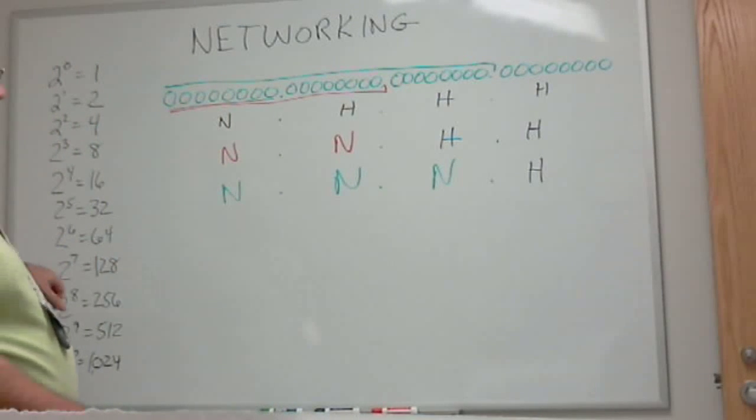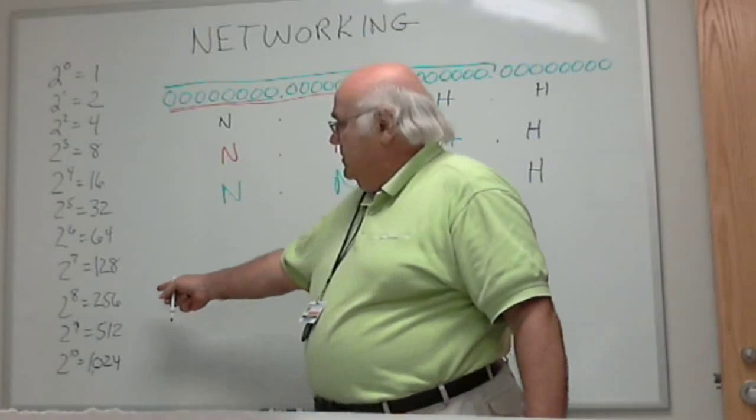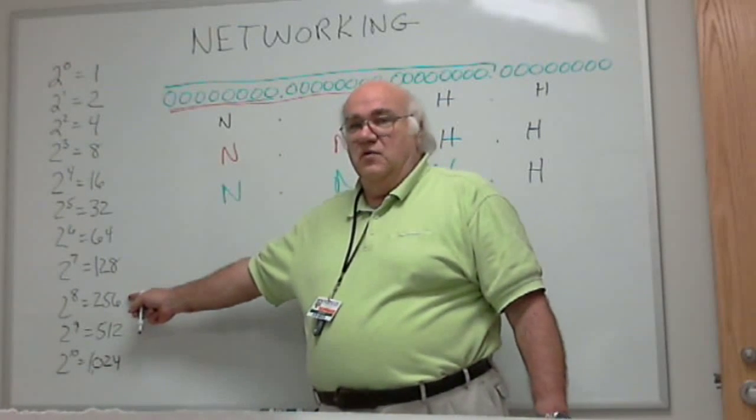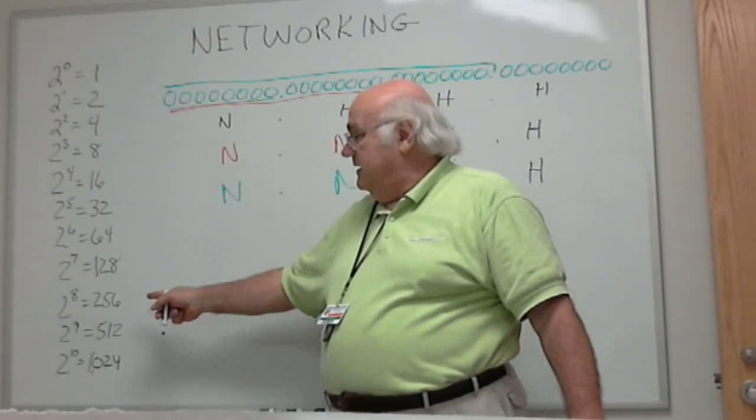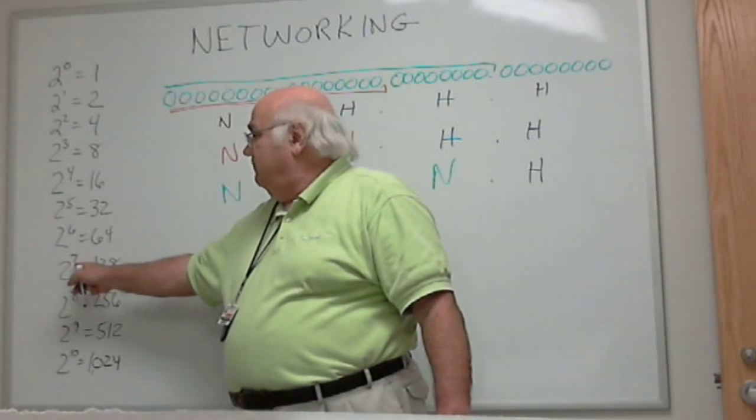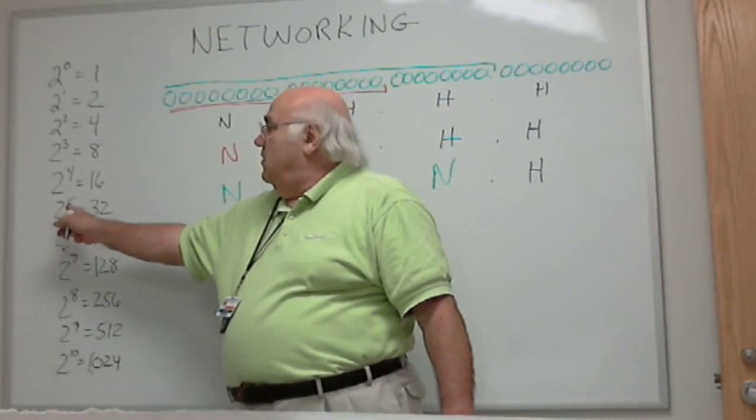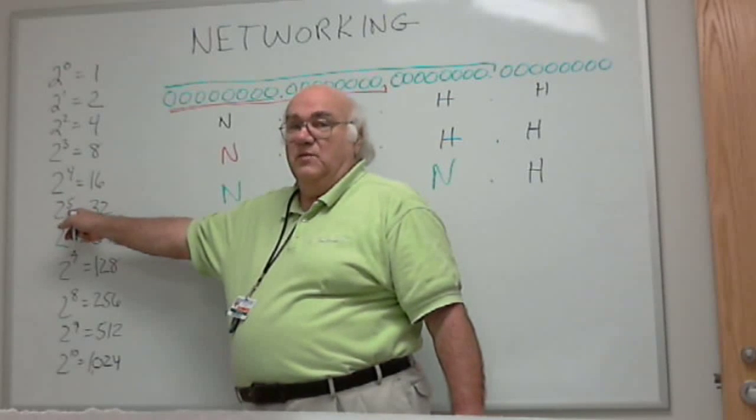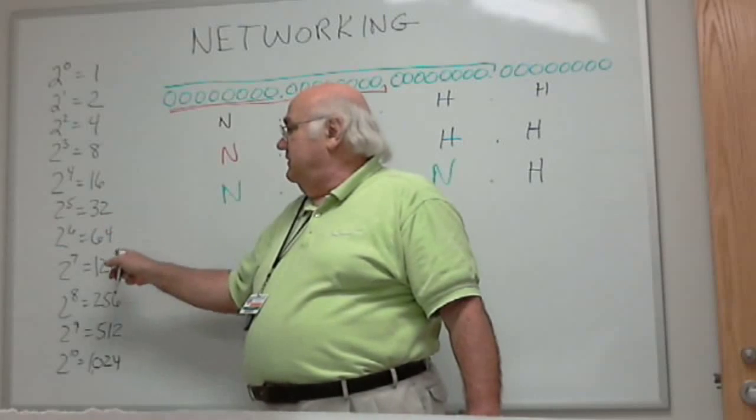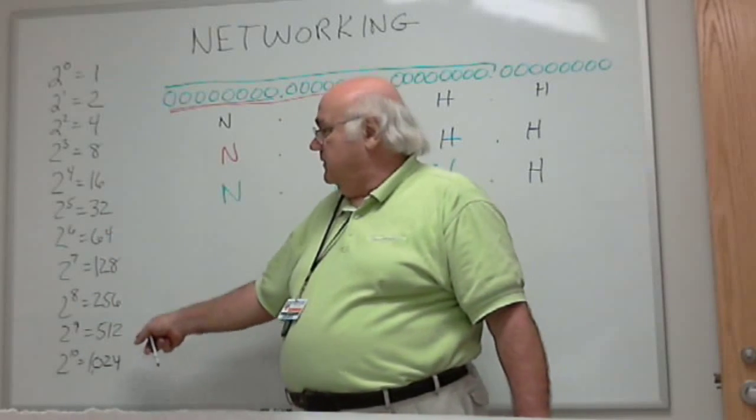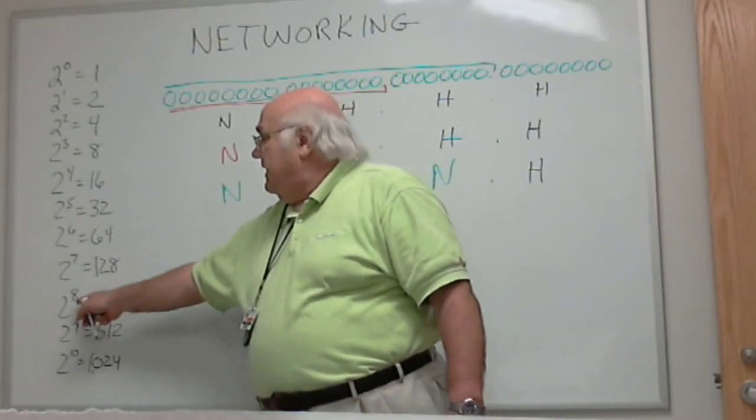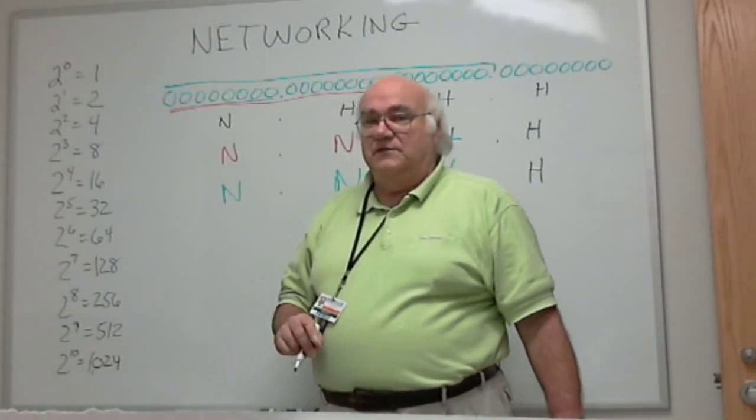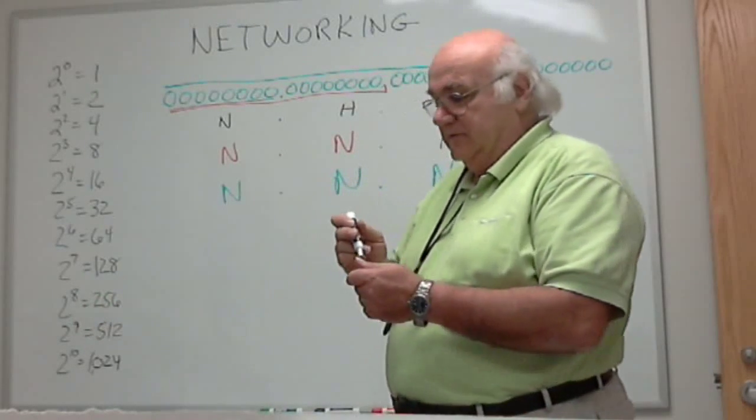My little chart over here that I put up on the board for you is 2 to the 8th is 256. Again, this is a number of bits. So since we're in binary, we're taking 2 to whatever number of bits we have, and that's going to give you a decimal number for you to play with. 2 to the 8th power, 8 bits, 256 different addresses. That's important to remember.